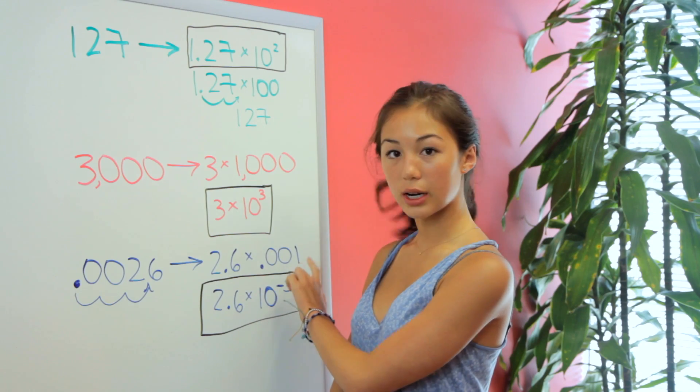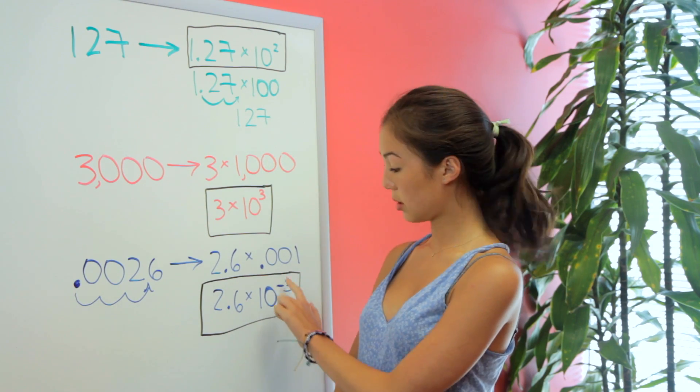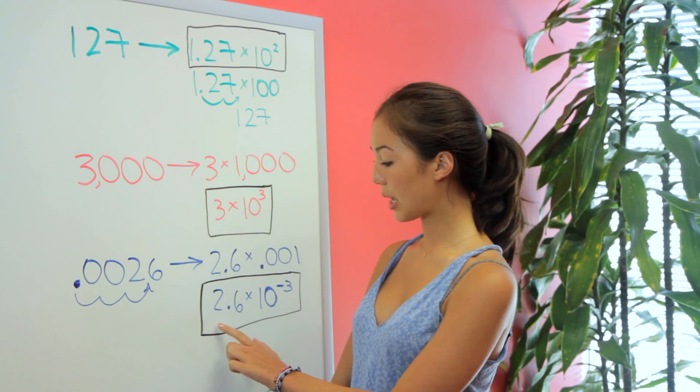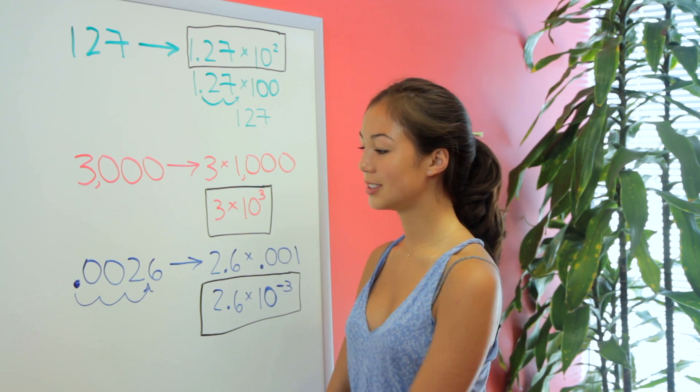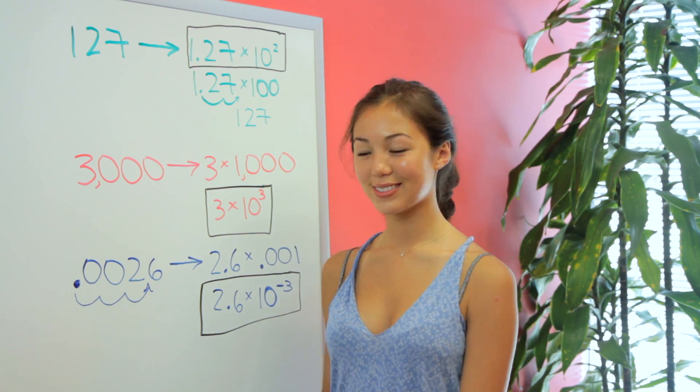0.001 is the same as 10 to the negative third, moving over 3 times. So we have 2.6 times 10 to the negative third, as our final scientific notation of this number.